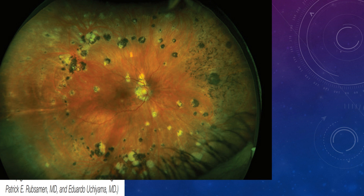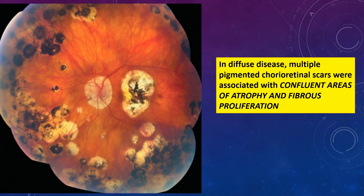Another picture shows multiple ovoid, creamy, whitish-to-yellowish lesions scattered along the posterior pole, more on the nasal side. These lesions are of variable ages — some are yellowish and some have developed pigmentation, giving a punched-out appearance with RPE atrophy, through which underlying choroidal vessels are visible. In diffuse disease, multiple pigmented scars become confluent areas of atrophy with fibrous proliferation — a typical feature of multifocal choroiditis is significant fibrosis around scarred areas.